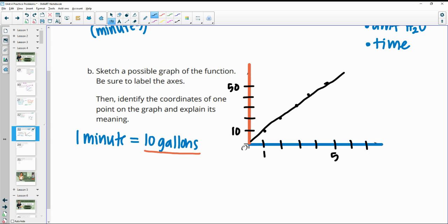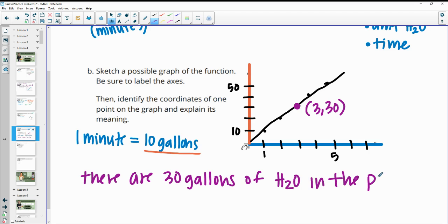Then it wants us to just pick a point on this graph and explain what it means. You can pick any of these. I'm just going to pick this one is the 0.330. So this means there are 30 gallons of water in the pool after three minutes. And again, this part I made up. So you get to kind of make up some stuff for this situation. How fast your hose is actually filling your pool. And then just sketch a graph to go with it.